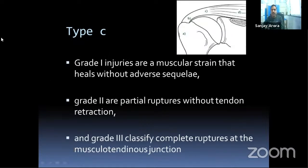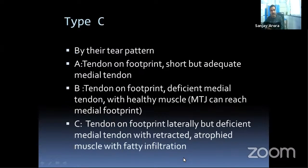At the musculotendinous junction level: Grade 1 injuries are muscle strains that heal without adverse sequelae; Grade 2 are partial ruptures without tendon retraction, which also heal well; Grade 3 are complete ruptures at the musculotendinous junction, further subclassified by pattern — Type A: tendon on footprint with short but adequate medial tendon, sutured end-to-end; Type B: tendon on footprint with healthy muscle available for advancement; Type C: deficient medial tendon with retraction, atrophied muscle with fatty infiltration.